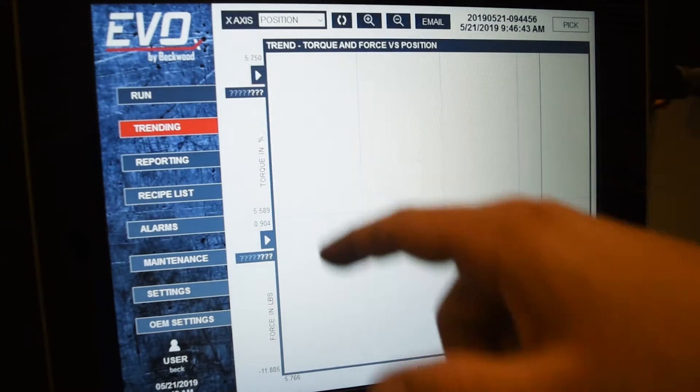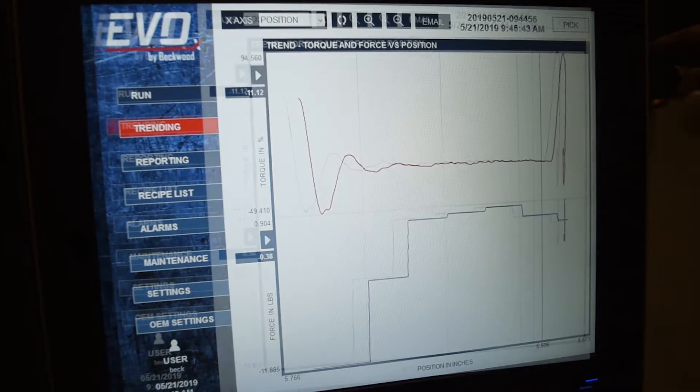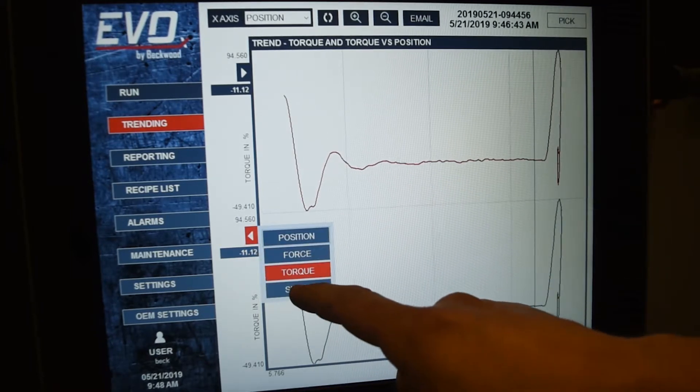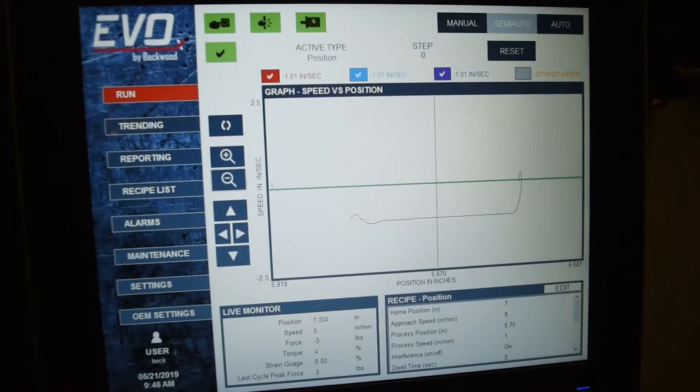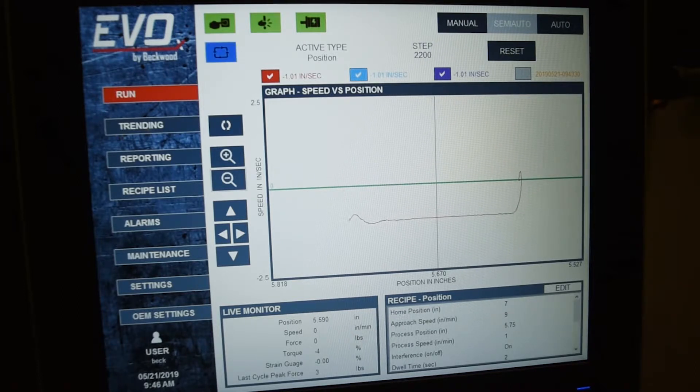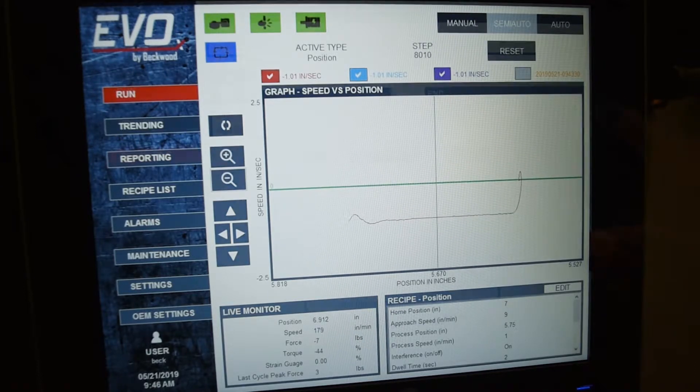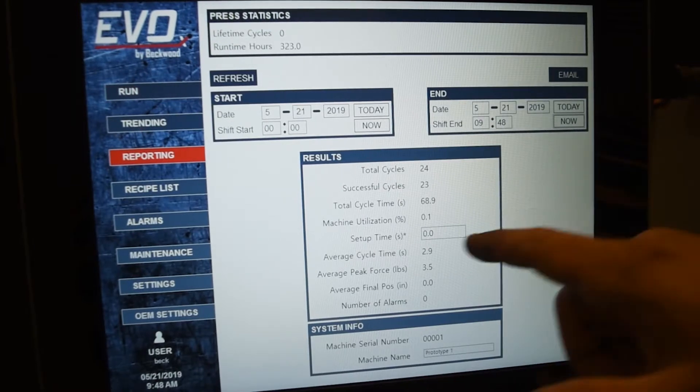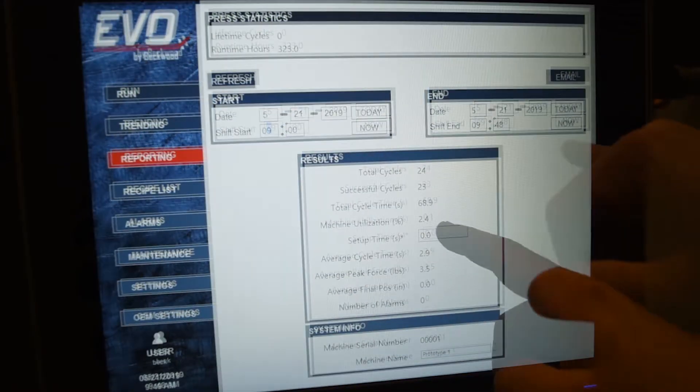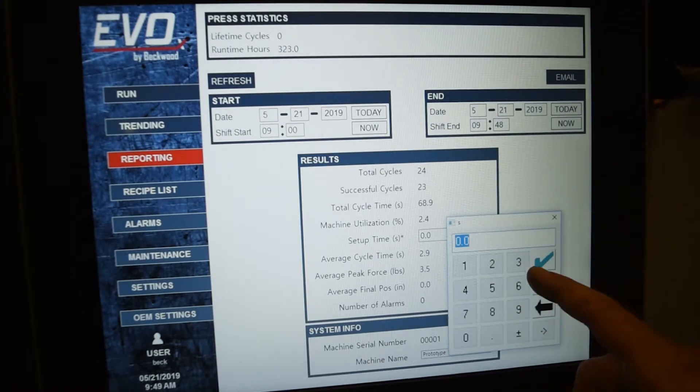The data acquisition system can record force, speed, time, torque, and a number of other things at a sample rate of a thousand samples per second. Not only are we recording that data at a high sample rate, we're also able to graphically display that on the HMI. All of this data that's recorded and graphed can also be exported and emailed to anybody with just a click of a few buttons.